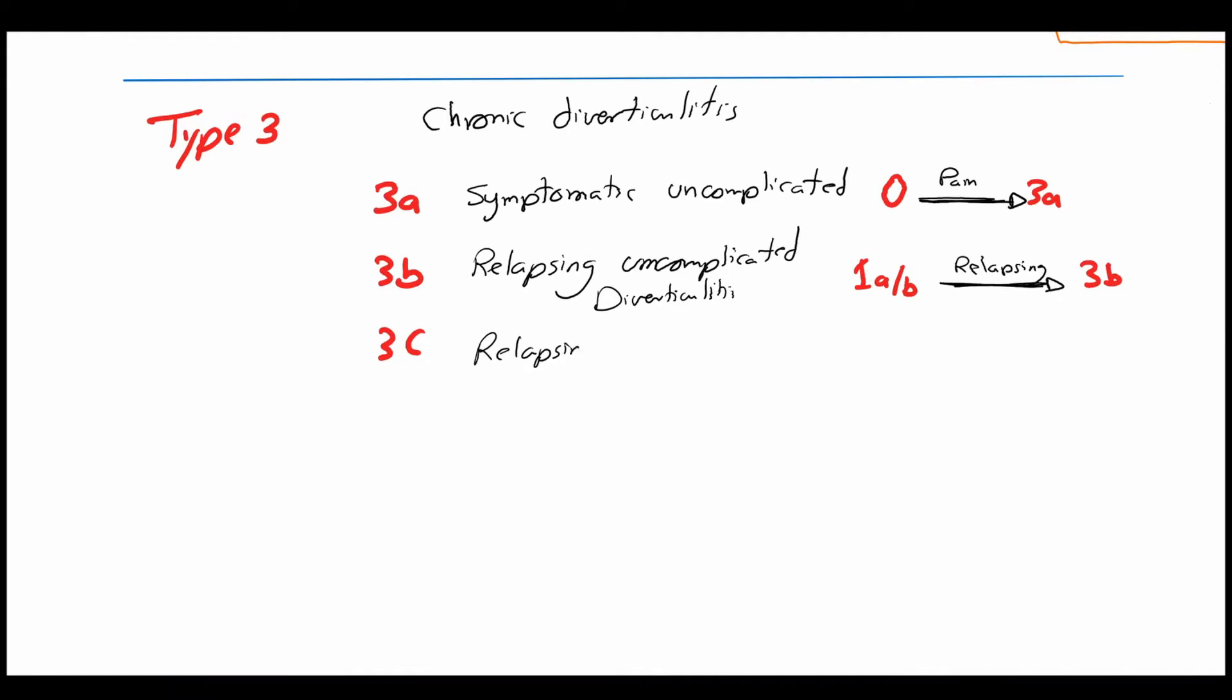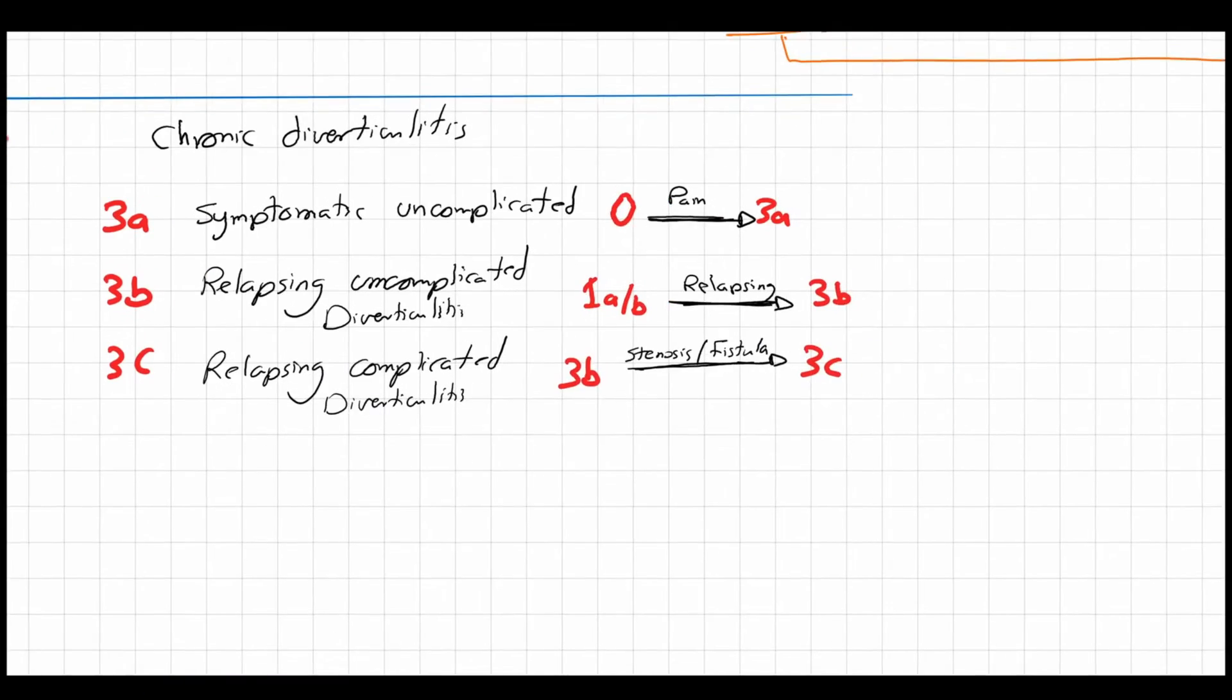Stage 3c is relapsing complicated diverticulitis. This is when a stage 3b relapsing diverticulitis is further complicated with chronic stenosis of the sigmoid colon or a fistula between the sigmoid colon and the urinary bladder or the vagina.